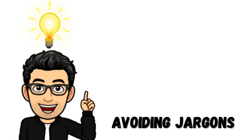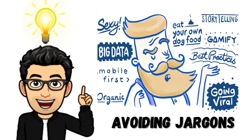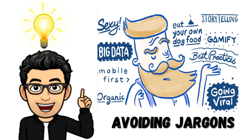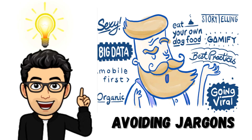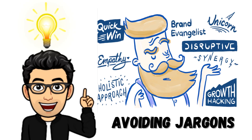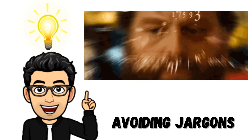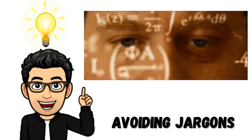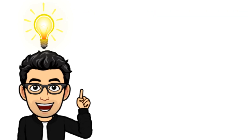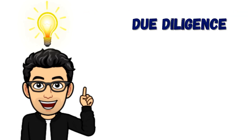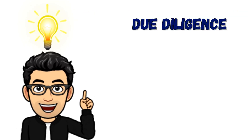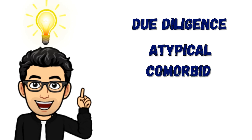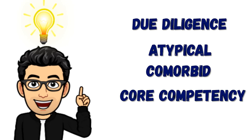Avoiding jargon or specialized language, or using them only when the other person or your audience understands them. For example: due diligence, atypical, comorbid, core competency, and codate.